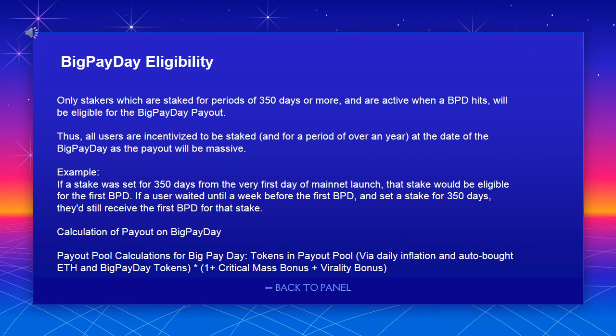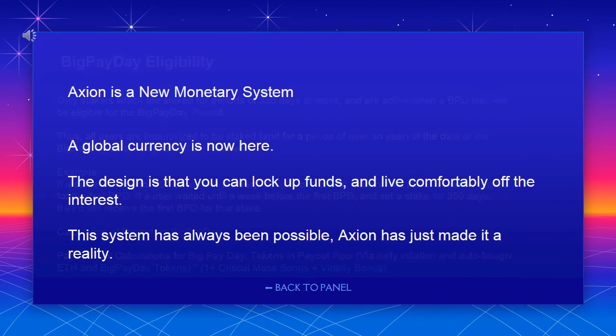Big Payday payout calculation: tokens in payout pool via daily inflation and auto-bought ETH, multiplied by (Big Payday tokens × (1 + critical mass bonus + virality bonus)). Axion is a new monetary system — a global currency is now here. The design is that you can lock up funds and live comfortably off the interest.